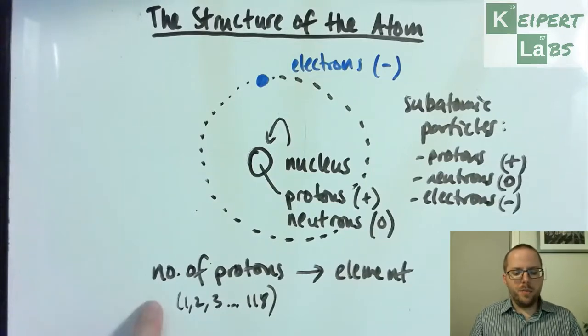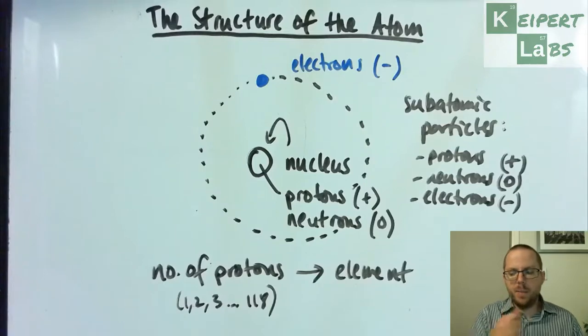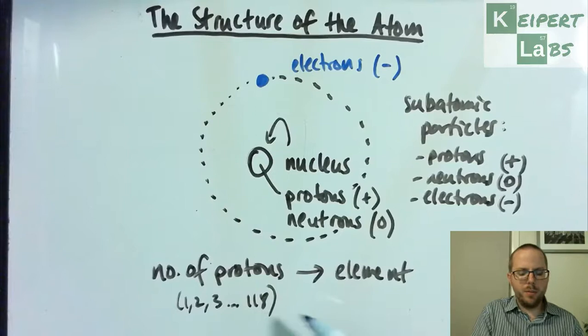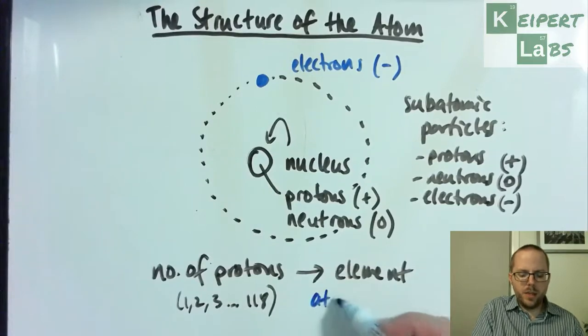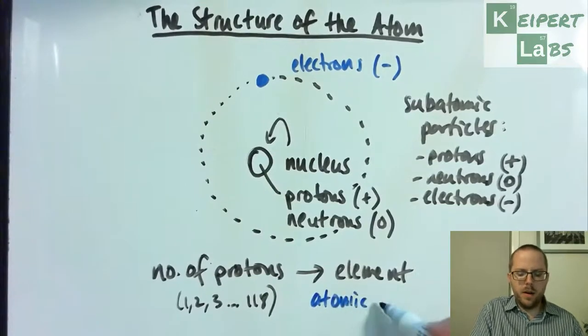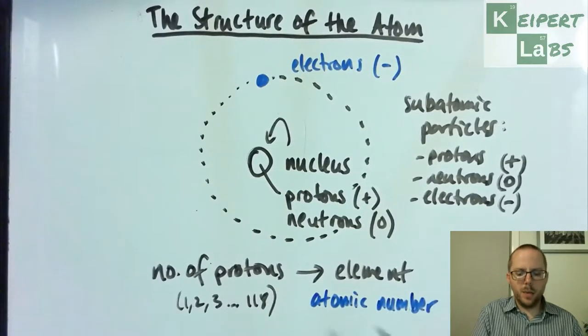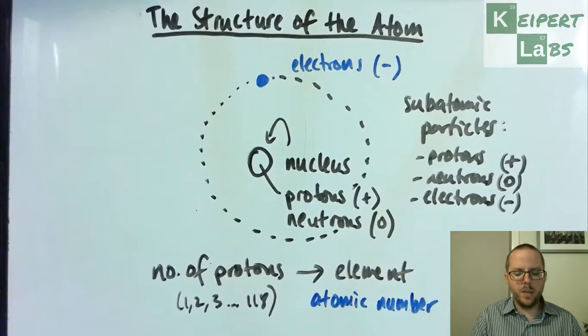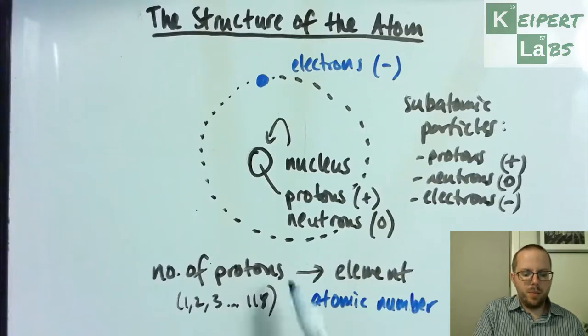Okay, so that number of protons dictates what the element is, and we give this number of protons a name. We call it the atomic number. So the atomic number of an atom or of an element is the number of protons.